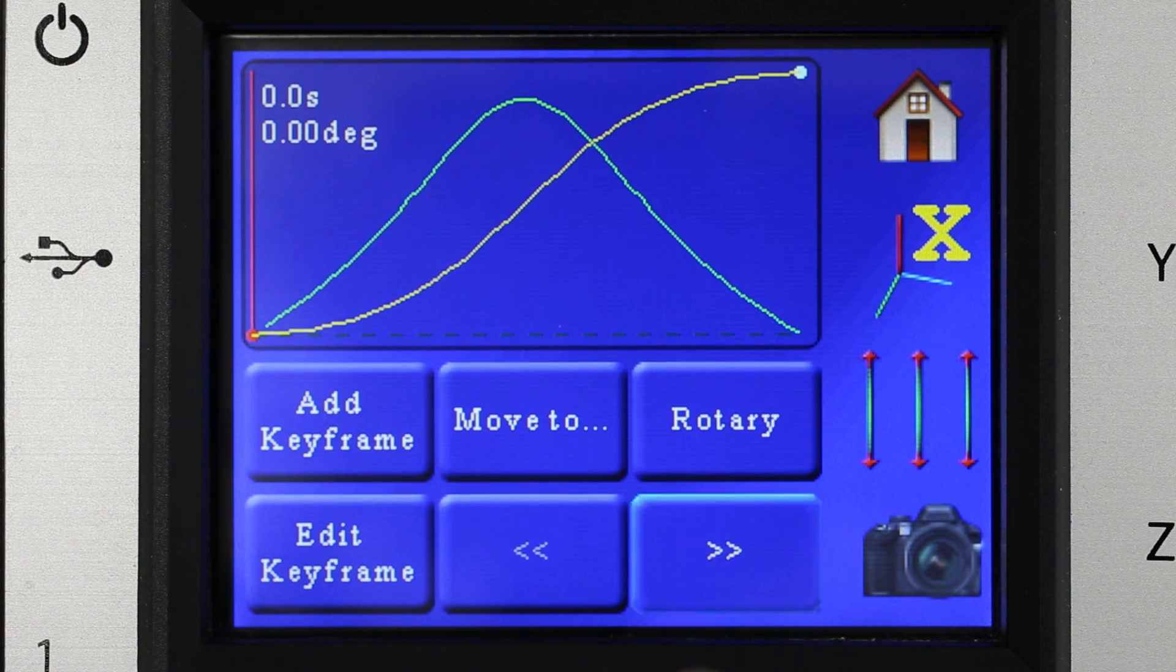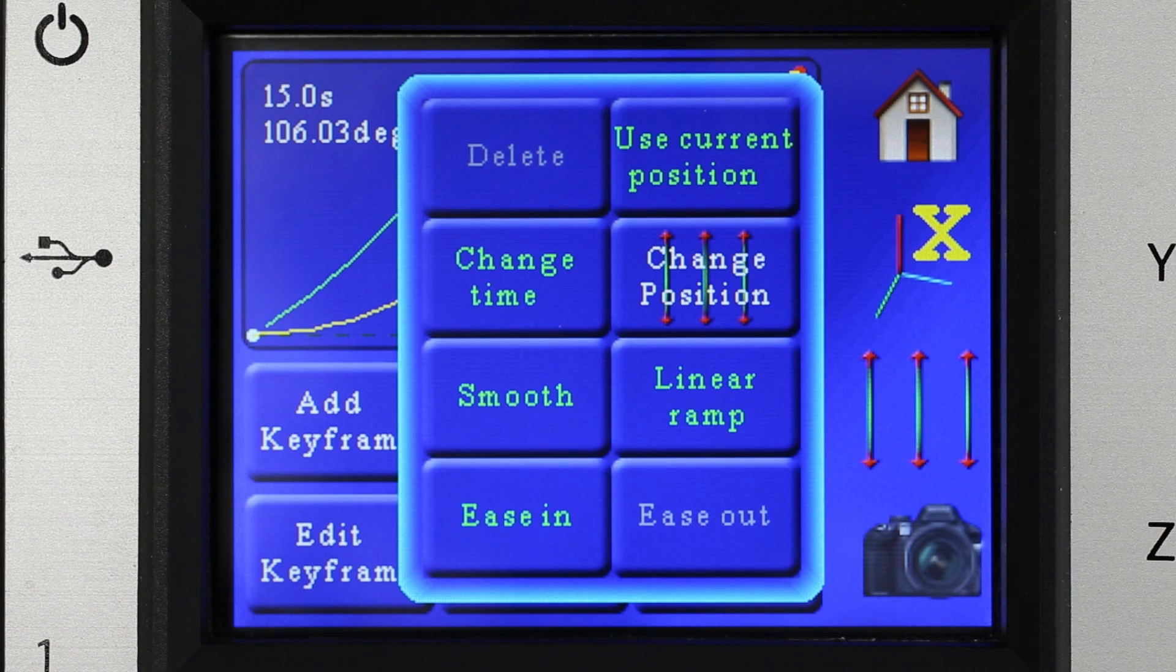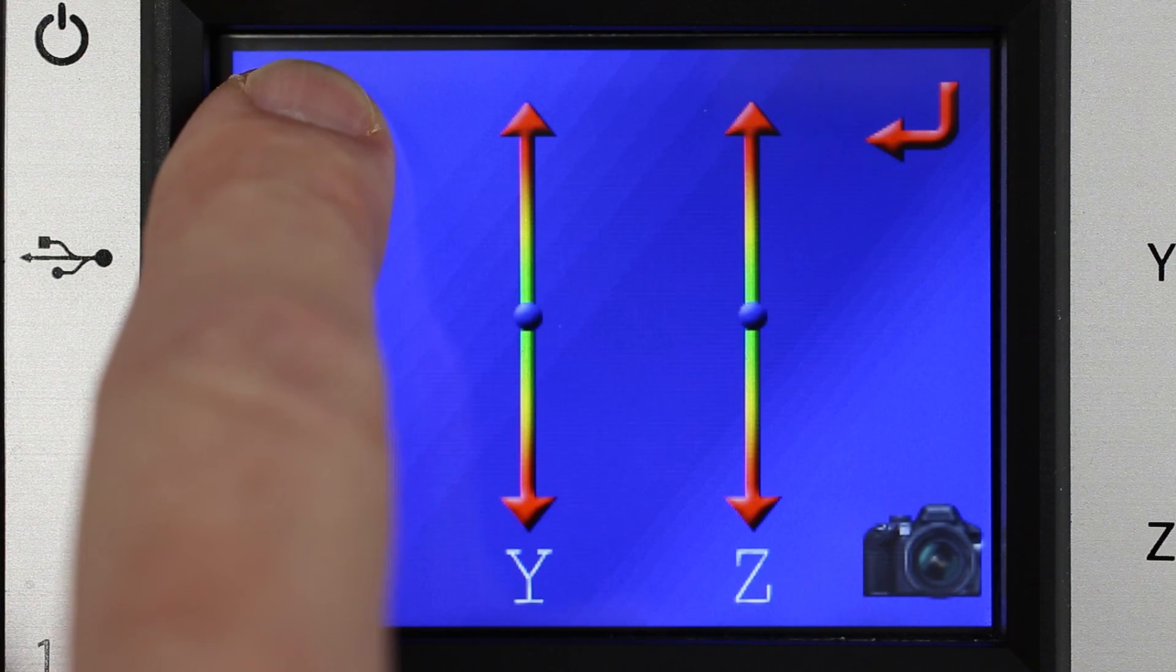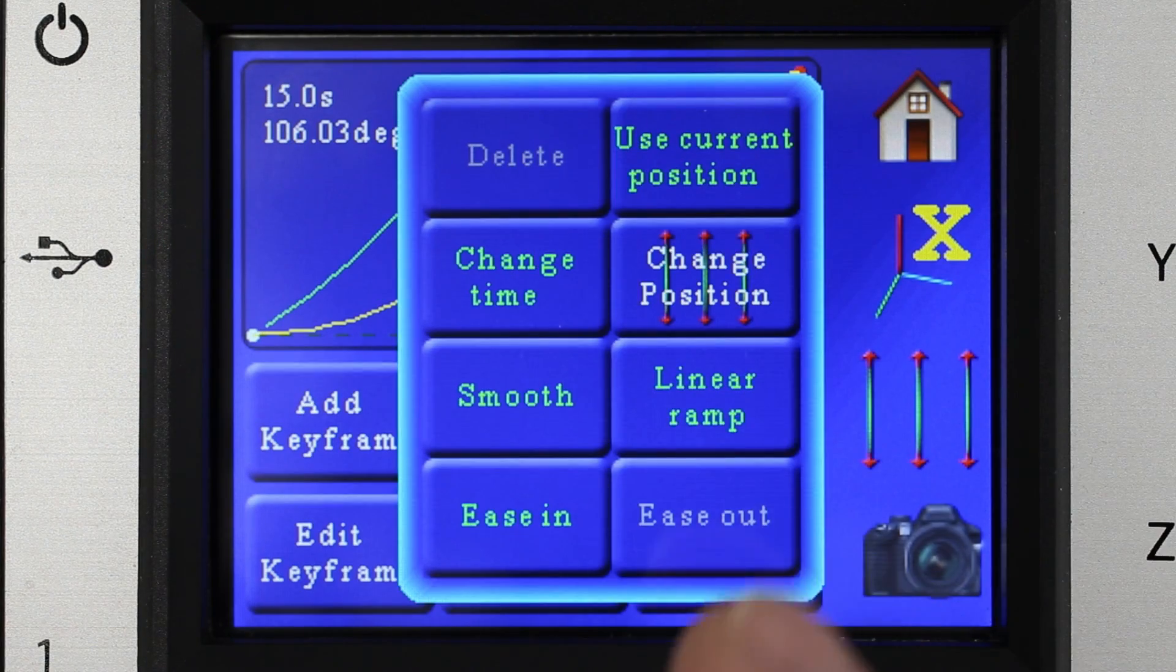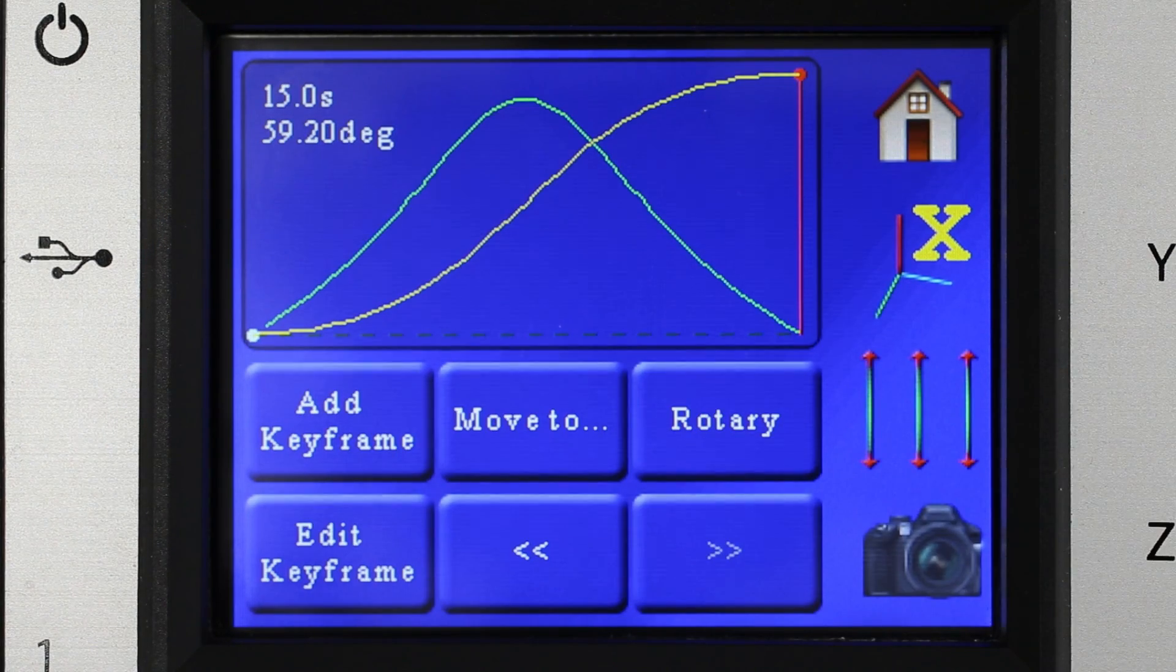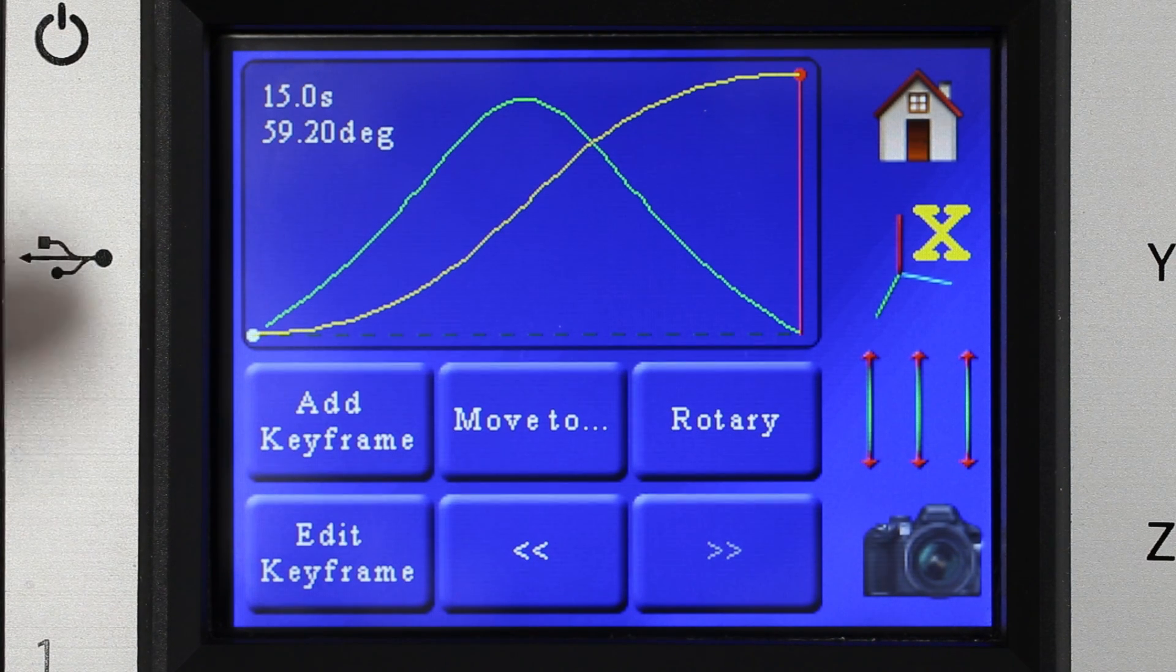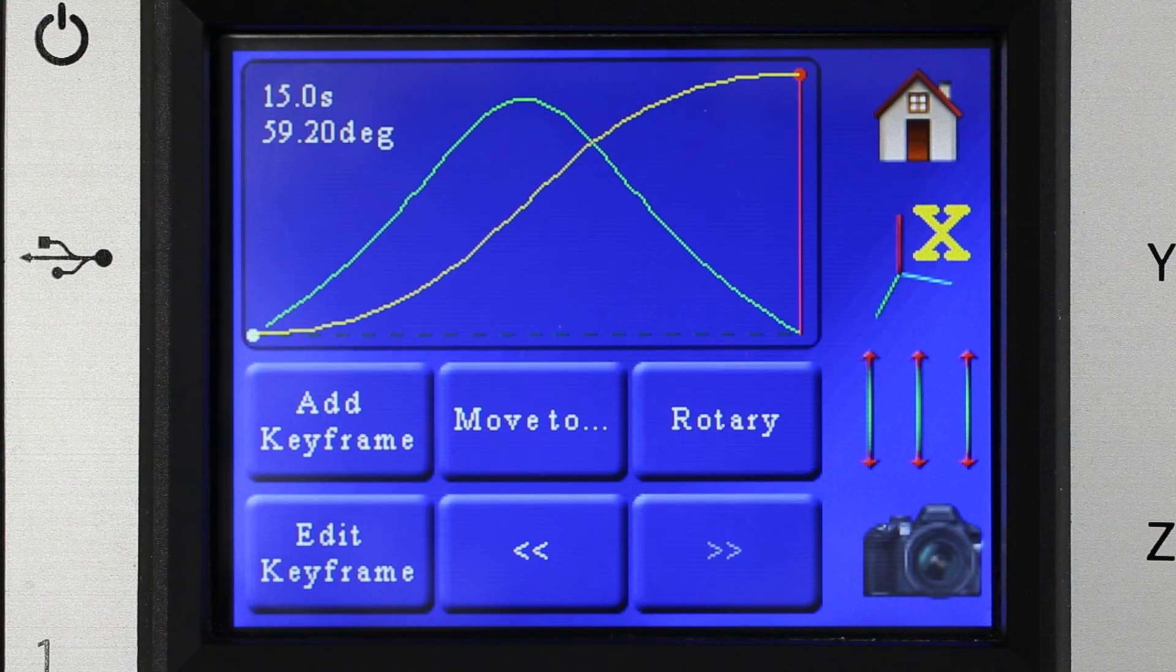So what we can do is just go there, we can hit edit keyframe and then there we can go and change that position if we want. So we just move whatever position we want and use current position and then there we go. The curve won't look any different but the distance has changed or the amount of displacement, the degrees has changed because the move profile still looks the same.